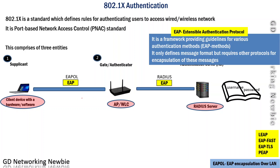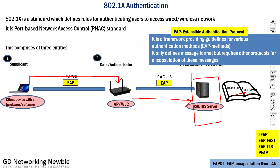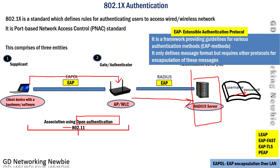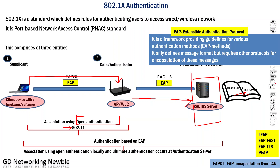The association between the supplicant and the authenticator is needed so that messages can reach the authentication server. The user must be able to access at least the authenticator or access point first, so the authenticator can then forward credentials to the authentication server. From the supplicant to the authenticator, we use open authentication — defined by the 802.11 standard — where no password is needed. Once this association is done, credentials are forwarded to the authentication server where the actual authentication takes place.